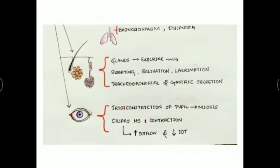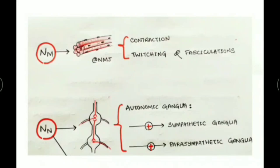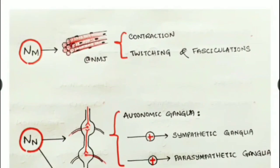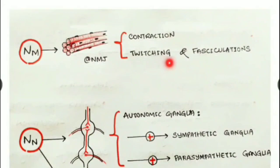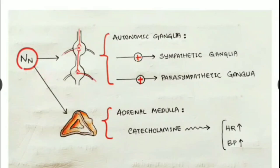Regarding nicotinic receptors, the NM receptors are located at the neuromuscular junction and are concerned with skeletal muscles. Stimulating NM receptors by acetylcholine causes skeletal muscles to contract, and causes twitching and fasciculations if more acetylcholine acts on these NM receptors.